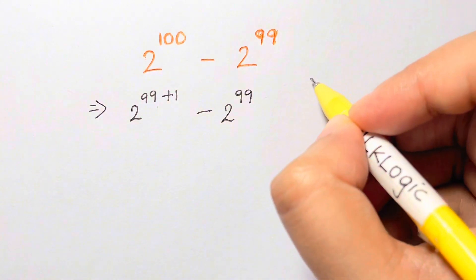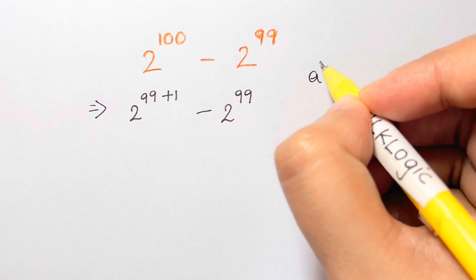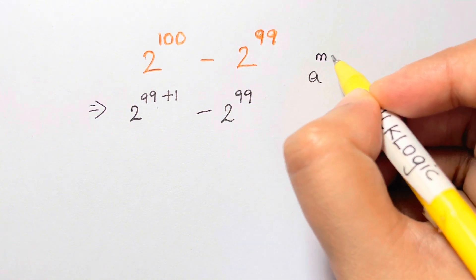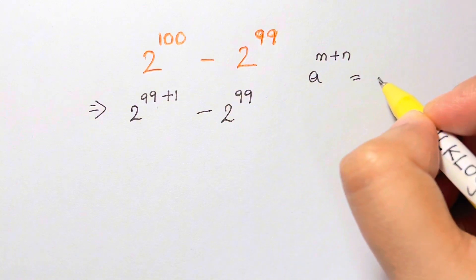Now, what we're going to do is, you have to remember this. Whenever you have something like this, a to the power of m plus n, you just split them: a to the power of m times a to the power of n.